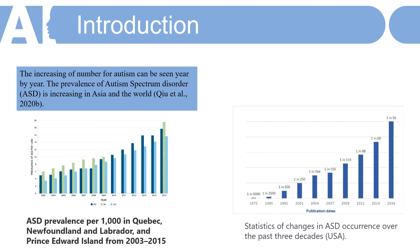As you can see here, there are two statistics showing the increasing number of autism every year. On the right side, autism occurrence went from 1 in 5,000 in the community to now 1 in 50 — a drastic increase. The left side shows ASD prevalence per 1,000 in Quebec, Newfoundland and Labrador, and Prince Edward Island from 2003 to 2015, also showing an increasing number of autism every year.